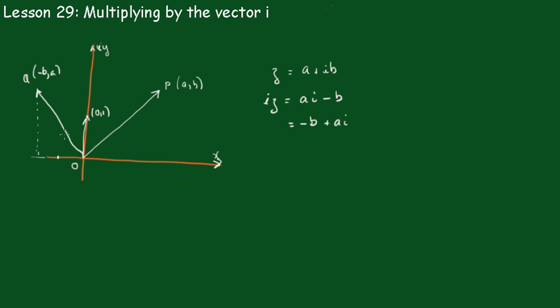Now we go back to our coordinate geometry techniques and look at the gradients of these lines. Now the gradient of op is going to be b over a, and the gradient of oq is going to be a over minus b. And if we multiply those two together, we get b on a times a on minus b, which is negative 1. And as you know, that means these two are at right angles to each other.